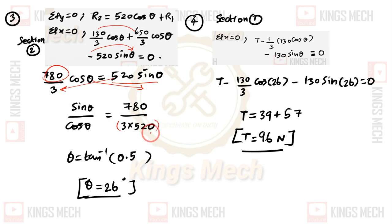This gives us tan(theta) = 0.5, so theta = tan^(-1)(0.5). The theta value is 26 degrees.